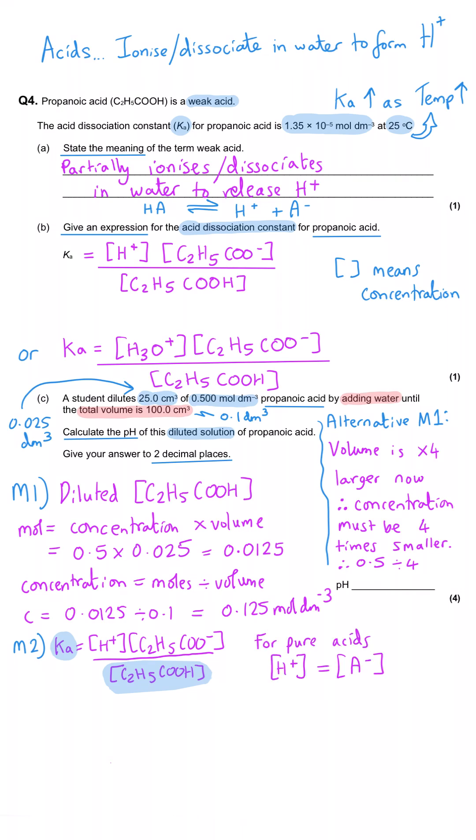Now what we need to remember here is that for pure weak acids, the concentration of hydrogen ions is going to be the same as the concentration of the salt that is produced once the propanoic acid donates those hydrogen ions. So in other words, H plus concentration is the same as the propanoate concentration. So when that is the case, we can replace those with just simply H plus squared.